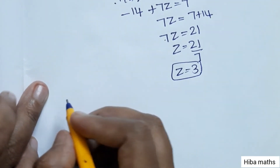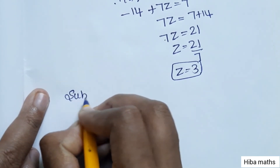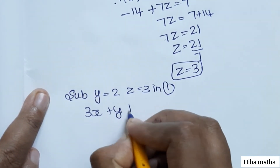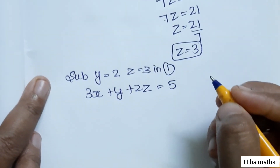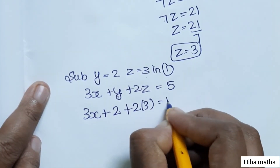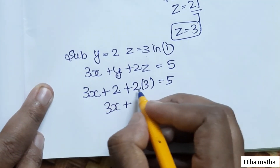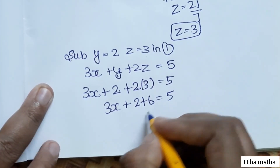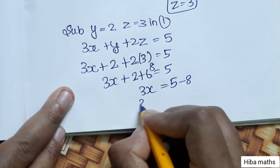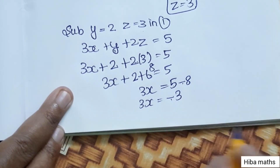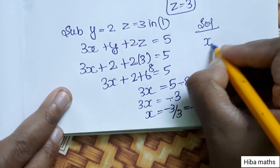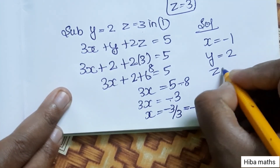Substitute Y = 2 and Z = 3 into the first equation: 3X + 2 + 2×3 = 5, so 3X + 2 + 6 = 5, giving 3X = 5 - 8 = -3, and therefore X = -1. The solution is X = -1, Y = 2, Z = 3.